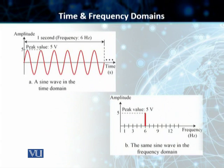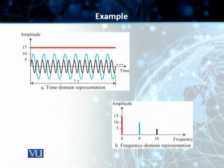Moving on to another example, we can see the time domain and the frequency domain plots of three different sine waves. Every single sine wave is different in amplitude and frequency. The first sine wave has a frequency of 0 and an amplitude of 15. The second sine wave has a frequency of 8 and an amplitude of 10. The third and last sine wave has a frequency of 16 and an amplitude of 5.